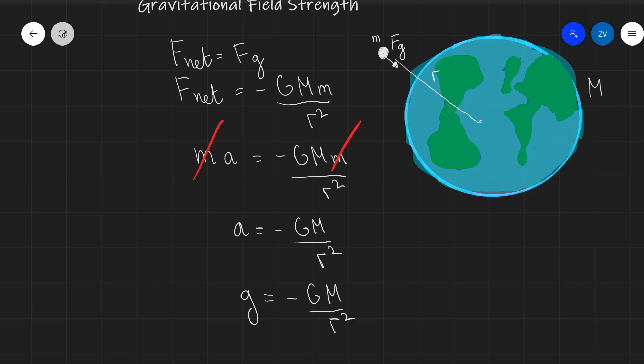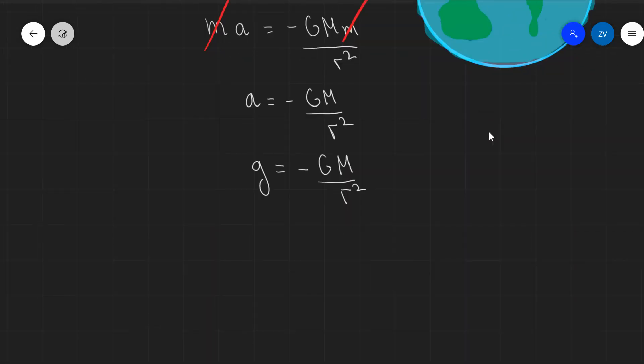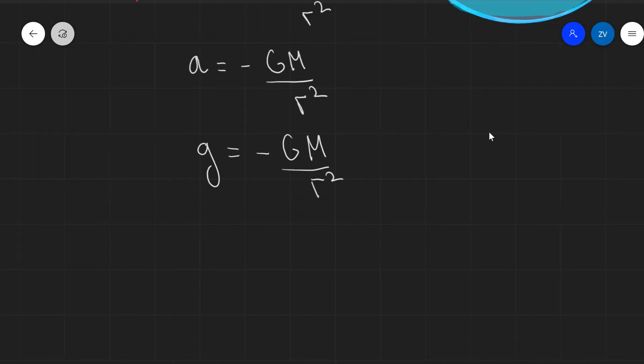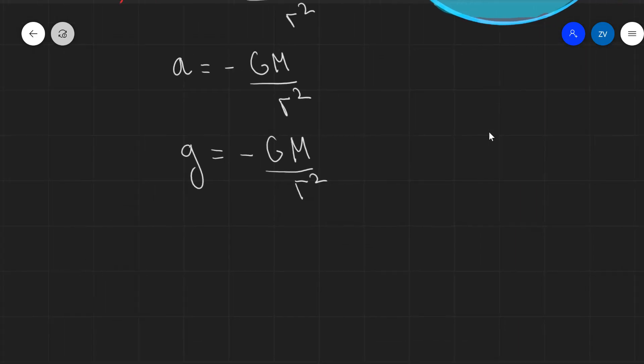We can actually use this formula to calculate the gravitational acceleration near the surface of the Earth. If we were to assume that this mass is actually moved somewhere near the surface and our distance R is now actually just the radius of the Earth, we can actually use this equation to plug in some numbers. So let's just do that.